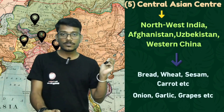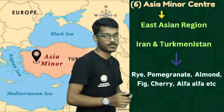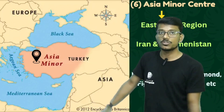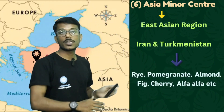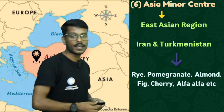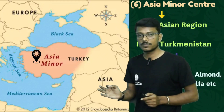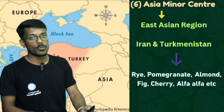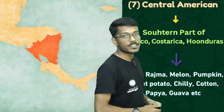The sixth center is the Asia Minor center of origin — the region near Turkey, including Iran and Turkmenistan. From this Asia Minor region, crops like rye, pomegranate, almond, fig, cherry, and alfalfa originated.